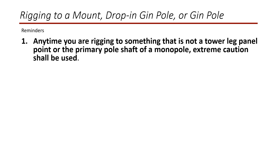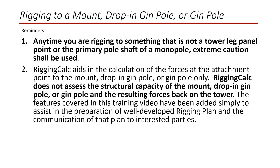Most of the time, the lift will be a class 4 and require a qualified engineer to evaluate the structural capacity. Also, the tower owner may require that the lift be considered a class 4. Second, Rigging Calc aids in the calculation of forces at the attachment point to the mount, drop-in jimple, or jimple only. Rigging Calc does not assess the structural capacity of the mount, drop-in jimple, or jimple, and the resulting forces back to the tower. The features have been added simply to assist in the preparation of a well-developed rigging plan and the communication of that plan to interested parties.